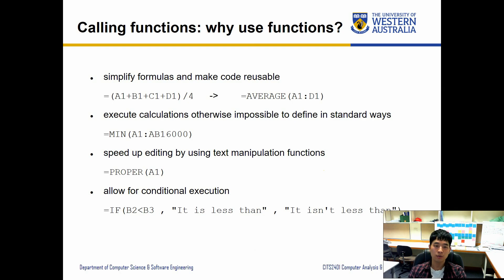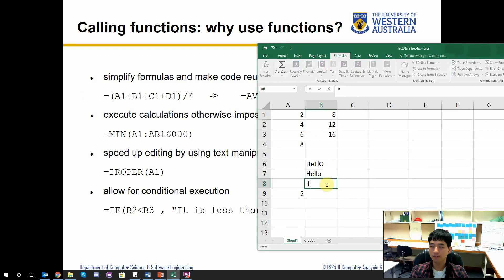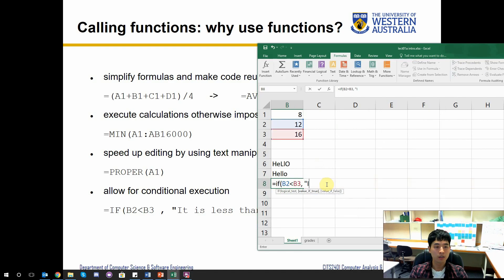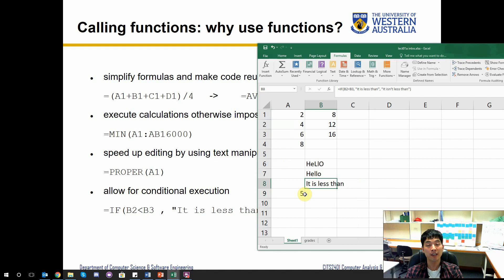And lastly, allow for conditional execution. If B2 is smaller than B3, then it's going to produce 'it is less than', otherwise it is going to produce 'it isn't less than'. So let's try that too. IF(B2<B3, 'it is less than', otherwise 'it isn't less than'). Okay, so in this instance it's returning—well, it's displaying 'it is less than' because B2 is indeed less than B3. So let's change this. If B3 was a 10, now it's the other way around. If I press enter, what do you think is going to happen?